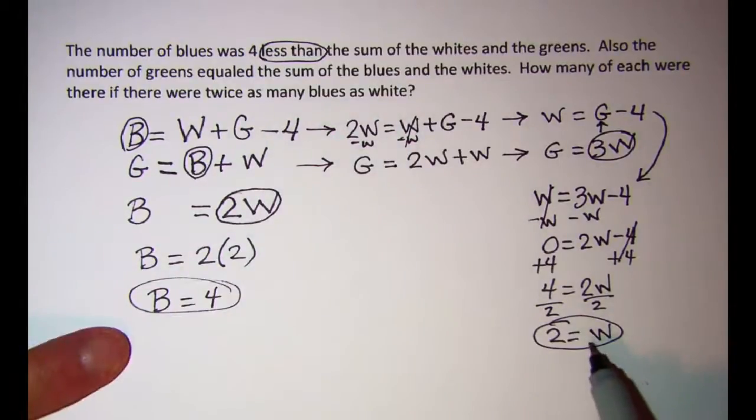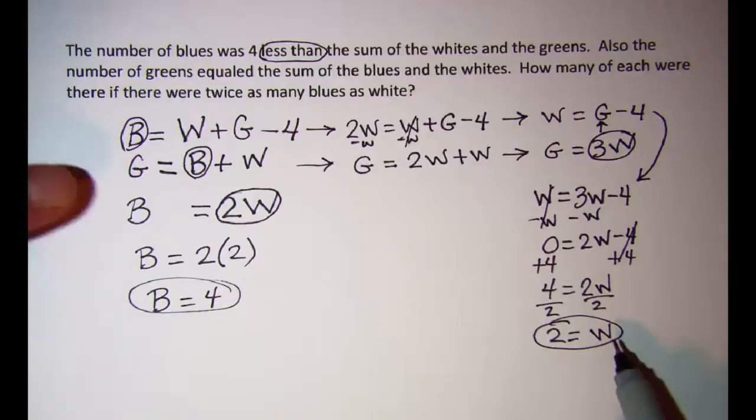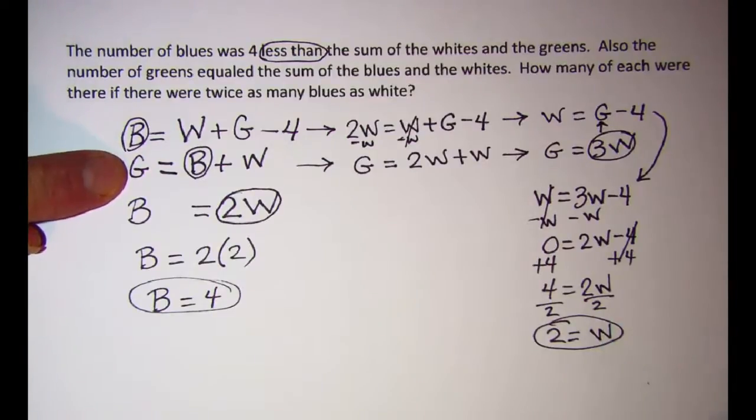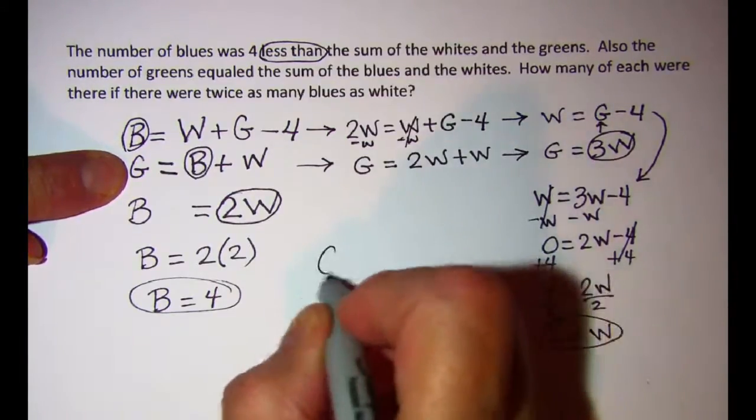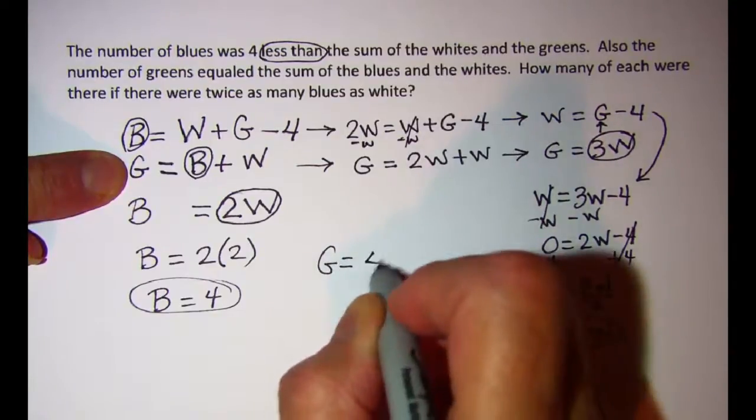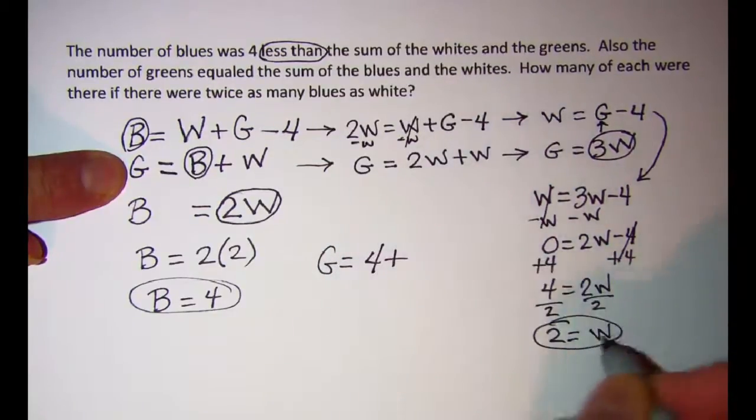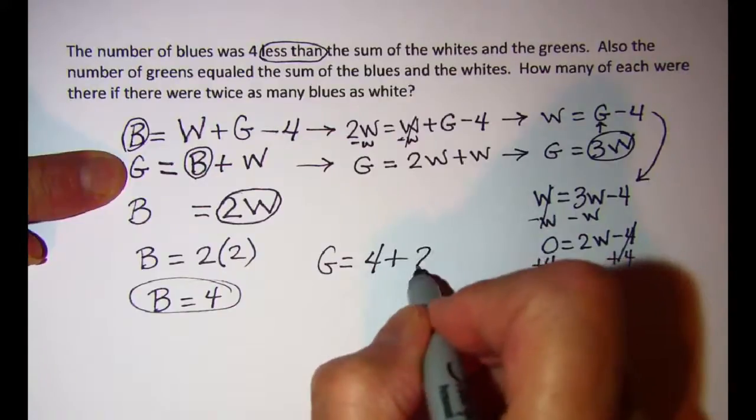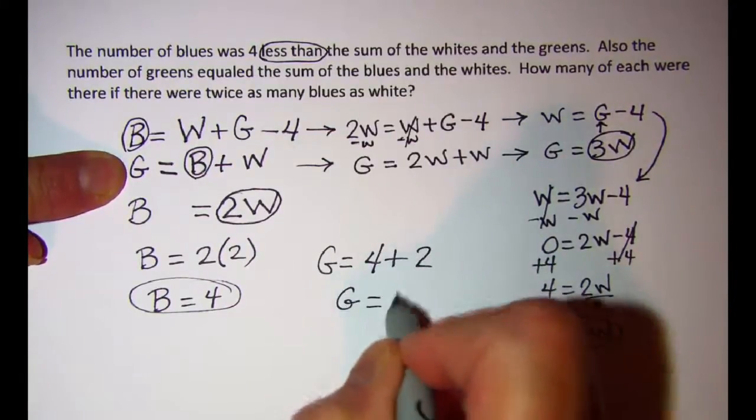And I still need the greens. Let's see. I can use this one. Greens is blue plus white. So greens is 6.